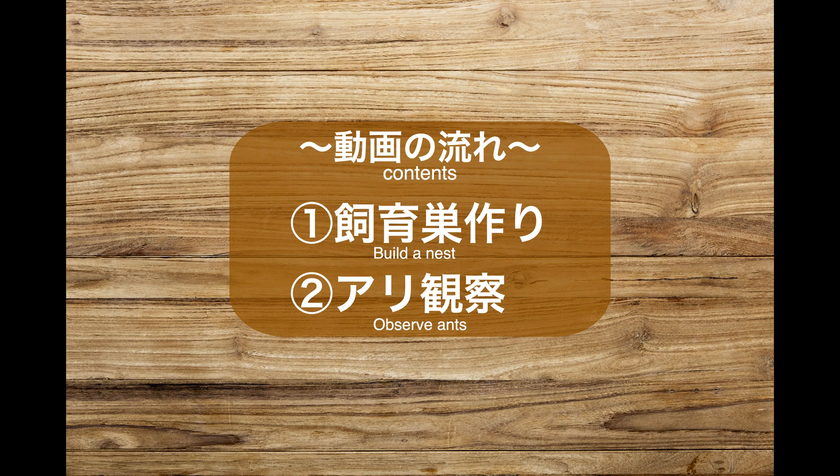今回はこのような環境、特にどんぐりの中に生息するアリたちを飼育するために、どんぐりの内部を模したようなシークスを作ってみました。シークスの作り方やこのシークスで観察できるアリの姿などをどうぞお楽しみください。今回の動画の流れは大まかに2つ、シークス作りとアリ観察になります。